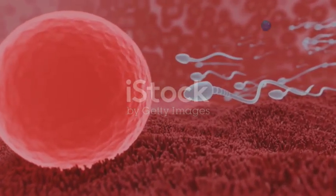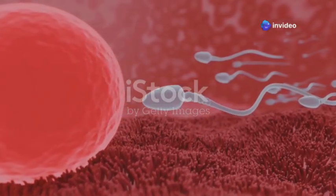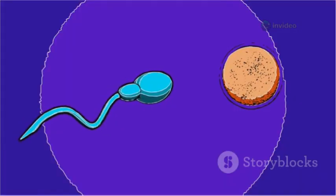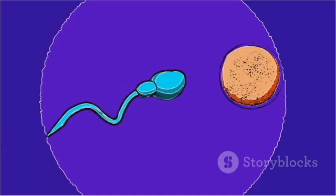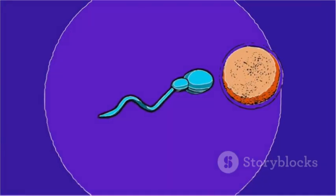Many sperm try to fertilize the egg, but usually, only one succeeds. Once a single sperm penetrates the egg's outer layer, a remarkable change occurs. The egg immediately seals itself off, preventing any other sperm from entering.